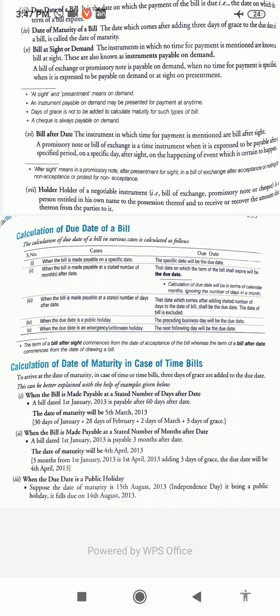Noting of a bill: when the bill gets dishonored, it is sent to the drawee through the notary public. The notary public makes a noting of dishonor, and this is known as noting of a bill. Notary public is a committee of persons appointed by the central and state government to exercise powers and functions relating to noting and protesting of negotiable instruments for dishonor. Noting charges is the fee paid to the notary public for noting and protesting the bill of exchange for its dishonor.